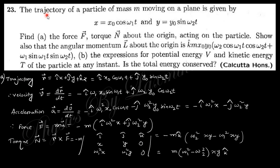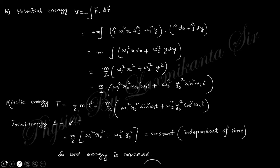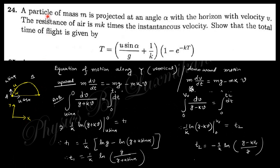Next question: the trajectory of a particle of mass m is given by x and y components. Find the force, torque about the origin, angular momentum, potential energy, kinetic energy, and total energy. Taking the first derivative of the position vector gives velocity; second derivative gives acceleration; force equals mass times acceleration. Torque is r × F, angular momentum is r × p. Potential energy is the work done as minus the integral of F · dr, and total energy equals kinetic plus potential — which is independent of time.